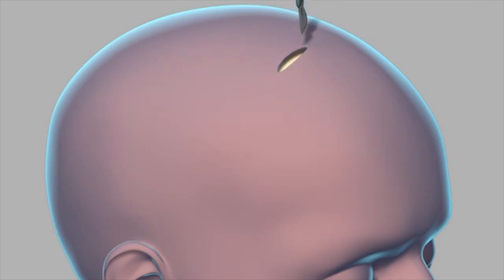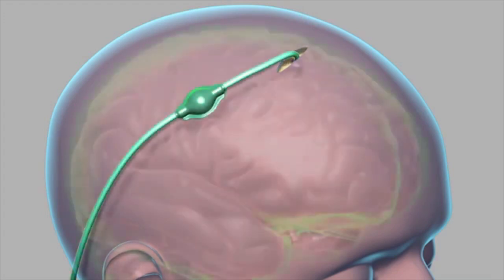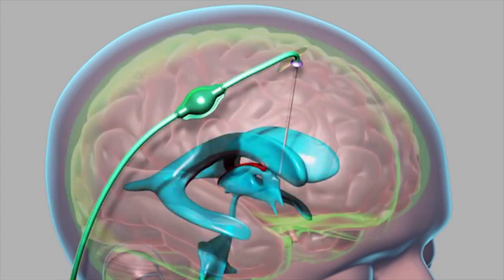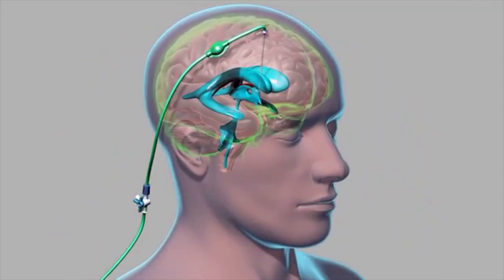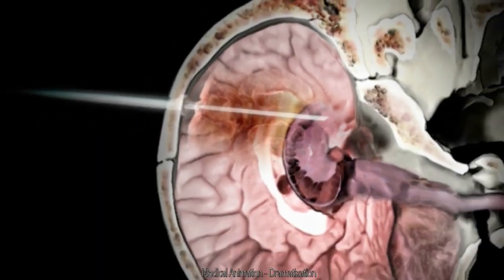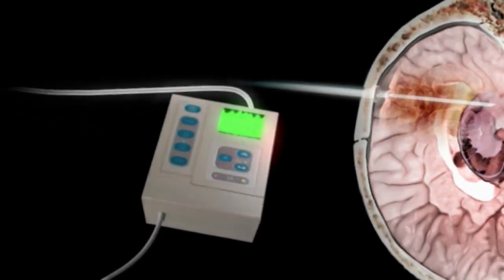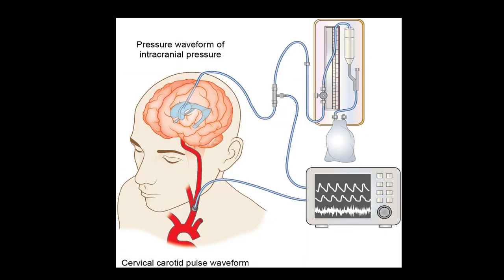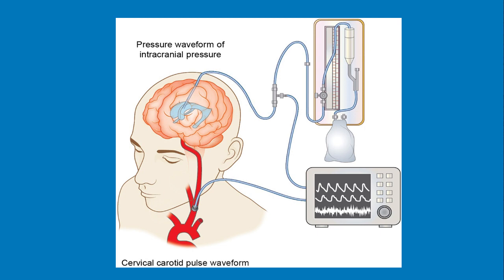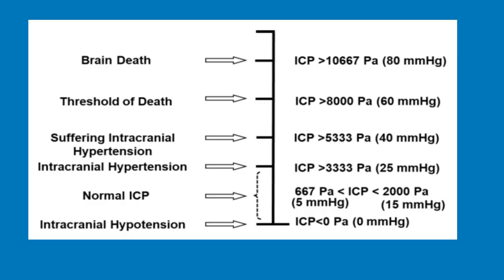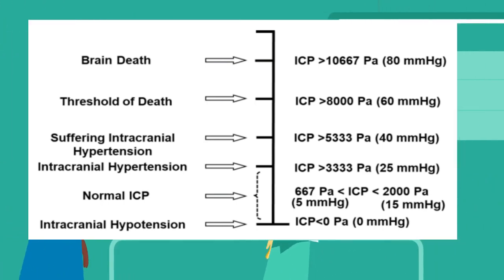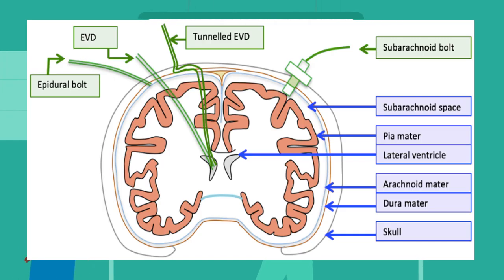While ICP monitoring is most commonly used for the management of severe head trauma, its use also extends to CSF circulatory disorders and can be either diagnostic or therapeutic. The three main types of ICP monitor are the external ventricular drain, or EVD, the subarachnoid bolt, and the epidural bolt. These techniques are used to monitor ICP readings on a patient monitor.